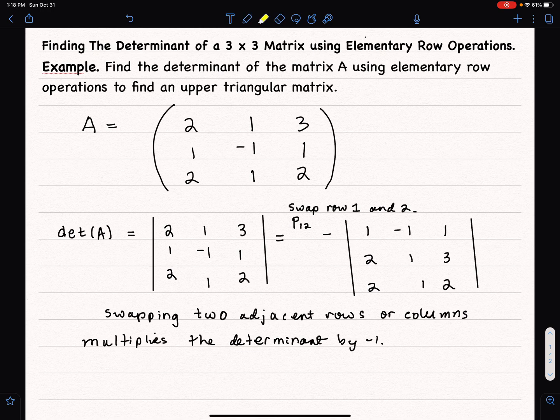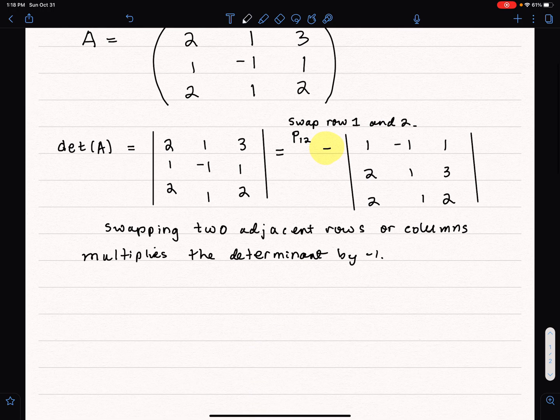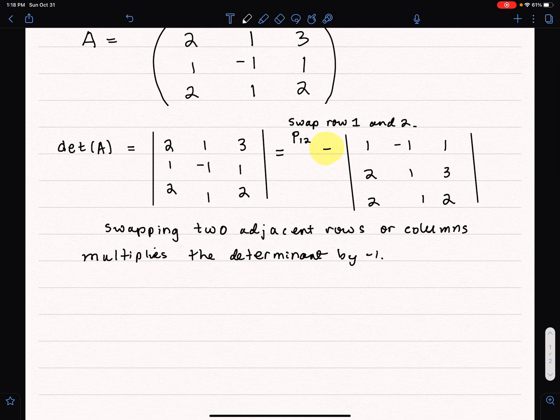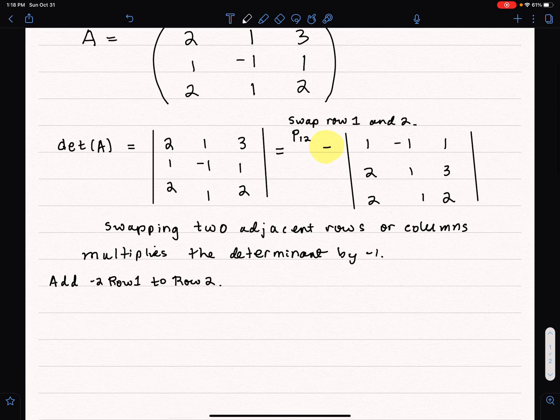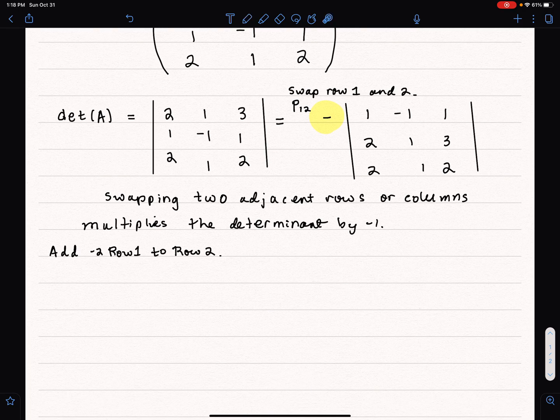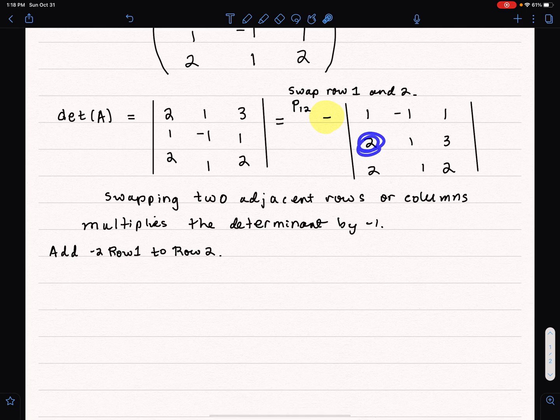I have this negative 1 right here, and then what I'm going to do is I'm going to add negative 2 times row 1 to row 2. Why would I do that? Because to get this in upper triangular form, I want a 0 right there.